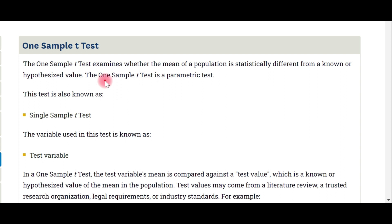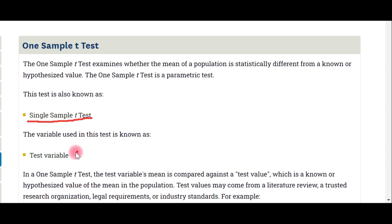With the sample data, we calculate the sample data mean. We assume normality for the one sample test. Then we calculate the sample mean and compare it against the population hypothesized value. The one sample test is also known by another name: the single sample test. The variable used in the test is called the test variable.